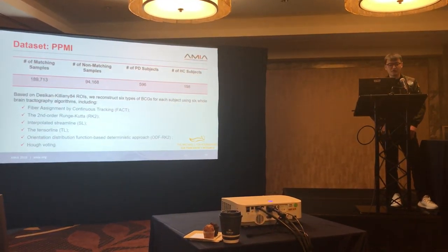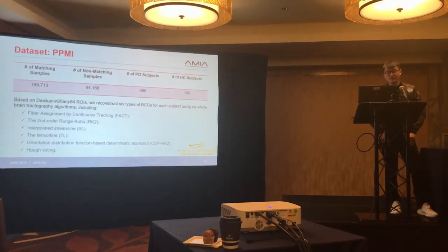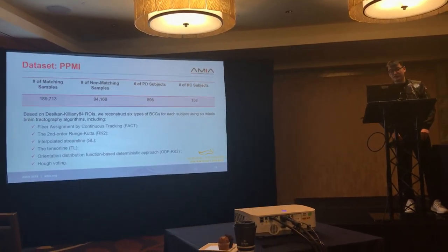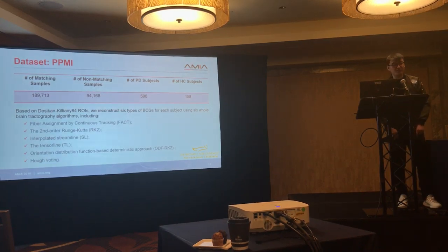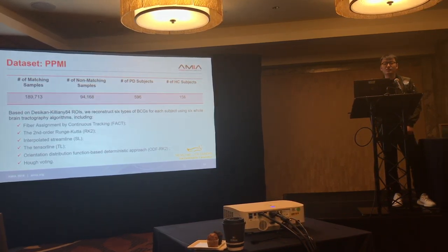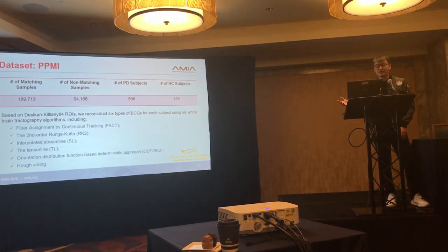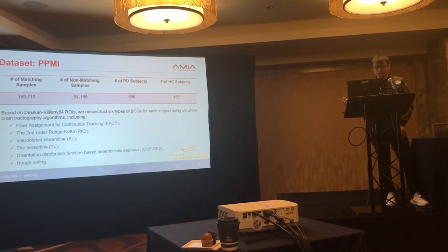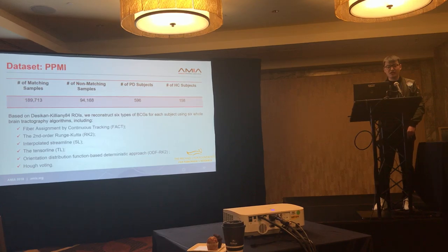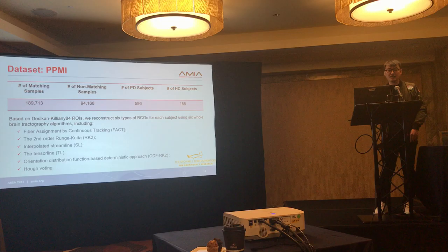This is the overview of our dataset, PPMI. If we were to perform direct sample-label prediction, the number of PD subjects is only around 600, and the number of healthy control subjects is 158 — not sufficient for deep learning. So we transfer the sample-label prediction to pairwise learning, which largely increases the training sample sizes. We also construct six types of BCGs for each subject using six different tractography algorithms, giving us six views.